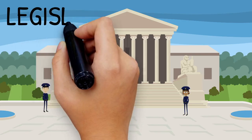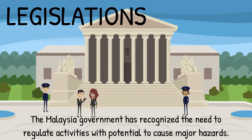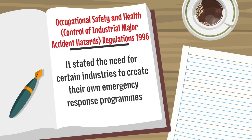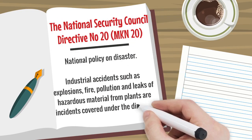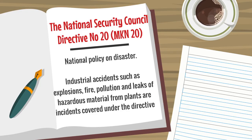The Malaysian government has recognized the need to regulate activities with potential to cause major hazards, leading to implementation of several legislations. Firstly, the Occupational Safety and Health Control of Industrial Major Accident Hazards Regulations 1996, which states the need for certain industries to create their own emergency response programs. Secondly, the National Security Council Directive Number 20, the national policy on disaster — industrial accidents such as explosions, fire, pollution, and leaks of hazardous material from plants are incidents covered under this directive.